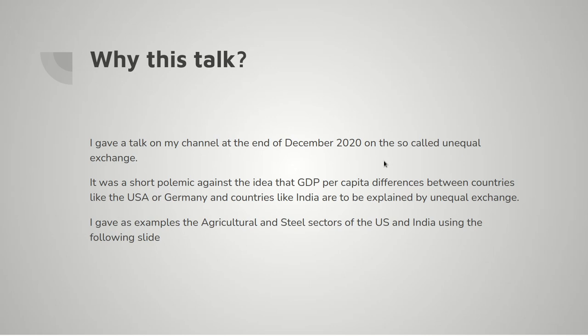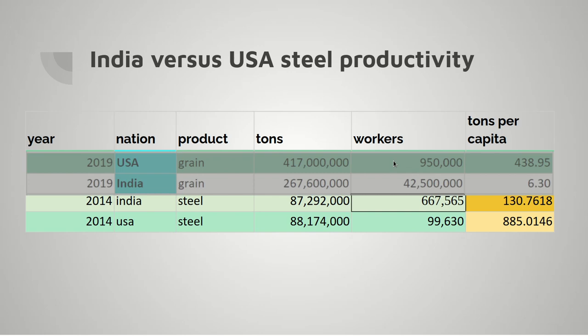I gave two examples of industries to disprove it: the agricultural and steel sectors in India and the US. I had this slide here, which shows for grain production a huge difference — a 70 to 1 difference roughly — between the output per worker in India and the output per worker in the USA. And for steel production, just under a seven-fold difference in productivity per worker.